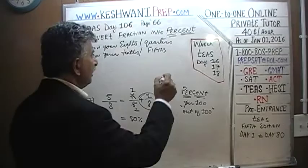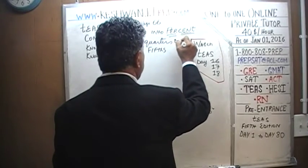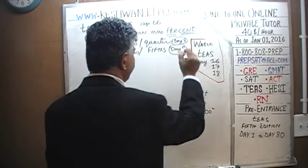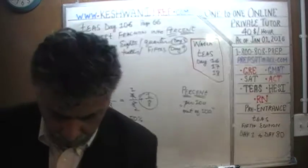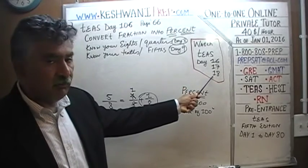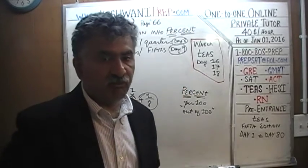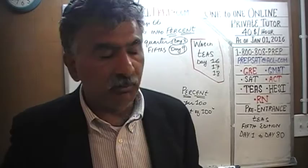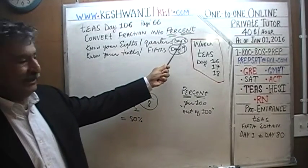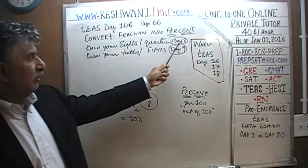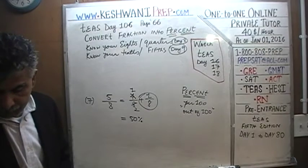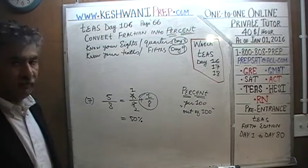If you don't know your eighths and quarters, watch day number 8 and day number 9 — type in TEAS day 8 and TEAS day 9, where we learn our eighths and quarters. And day number 9 is where we learn our tenths and fifths. I would also like you to watch day number 16, 17, and 18, where we do the problems dealing with conversion from fractions to decimals to percentage and back.